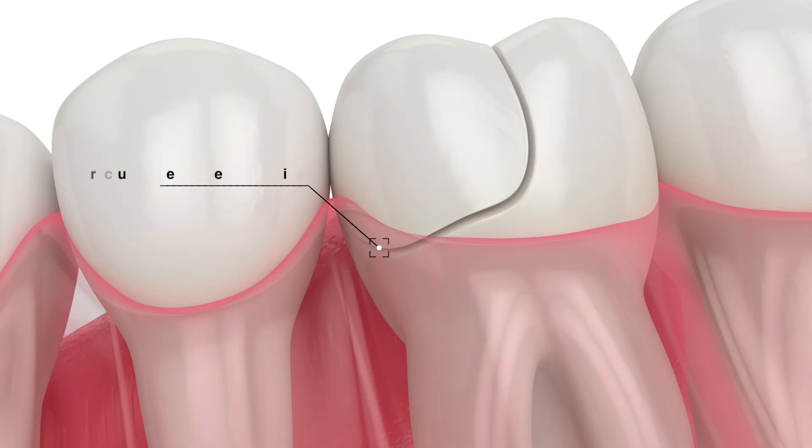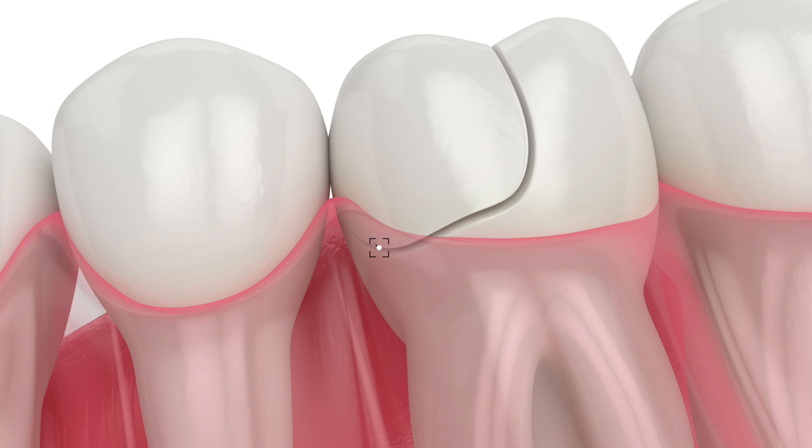A fracture below the gingival margin can be challenging to restore. A healthy sulcus is one to three millimeters and terminates with a junctional epithelium. A restoration margin extending no more than 0.5 to one millimeter into the sulcus may not cause prolonged inflammation, but it very well could. The possibility of biologic width invasion needs to be considered and factored into the treatment options. A rule of thumb is: if you cannot get a band around a tooth, then you cannot restore the tooth.